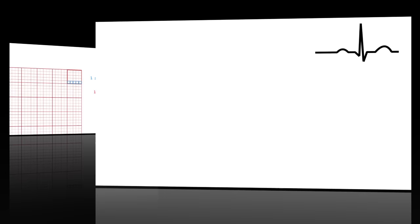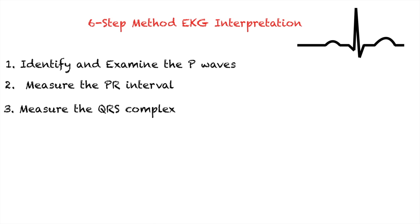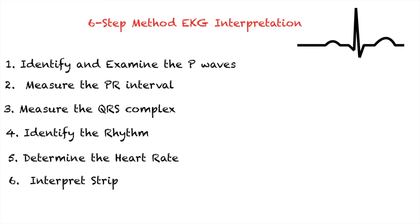Let's get on with our six-step EKG interpretation. First, identify and examine the P waves. Second, measure the PR interval. Third, measure the QRS complex. Fourth, identify the rhythm. Fifth, determine the heart rate. And sixth, interpret your strip. We're going to talk about each one.